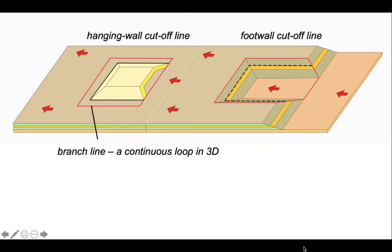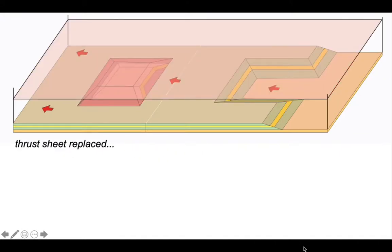Let's put our thrust sheet back on top. It's quite difficult to visualize all this in three dimensions. So let's simplify it and think about how we would encounter this geometry in a series of boreholes. Four boreholes tracking across the structure. What would these encounter? We can describe these from left to right.